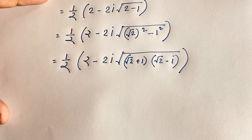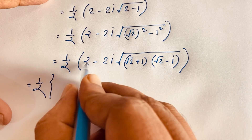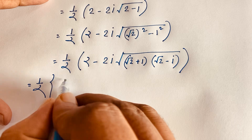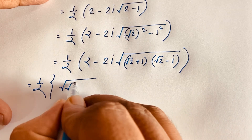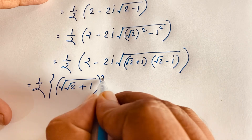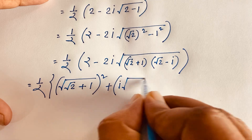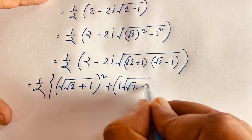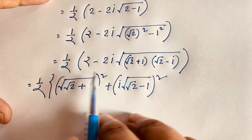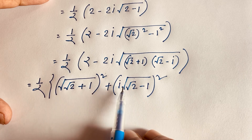In this expression, it is 1 over 2, and evaluating the two factors: it becomes square root of (√2 plus 1)² plus i, times square root of (√2 minus 1)². The square roots cancel, leaving √2 plus 1 and √2 minus 1.